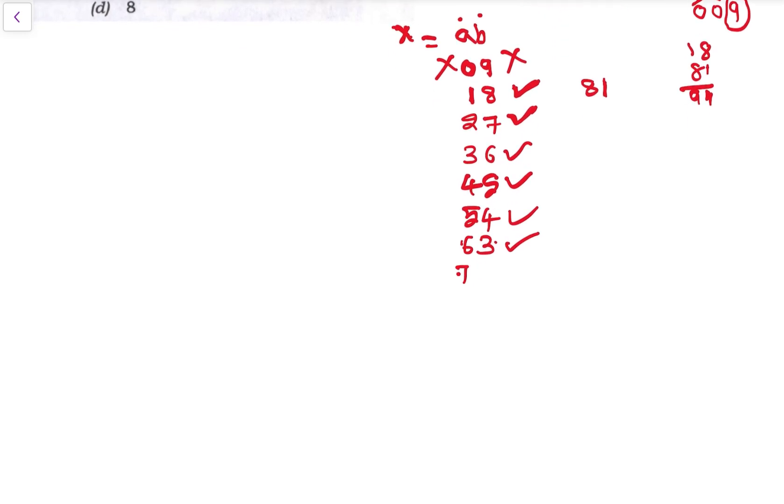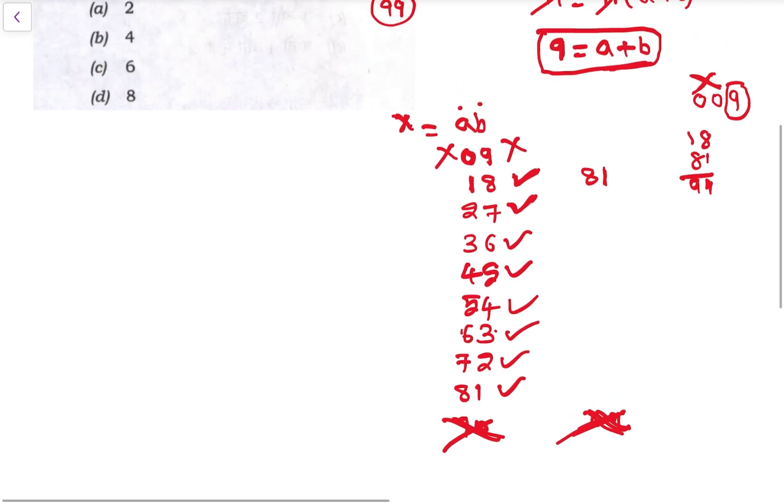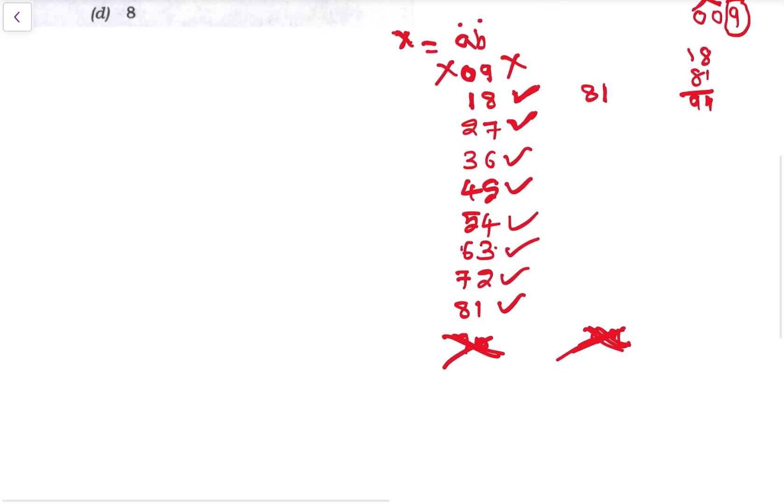Then a is 6 and b is 3, then 72, then 81. Then 90 - the reverse would be 09, so this is again not possible as a two-digit number.